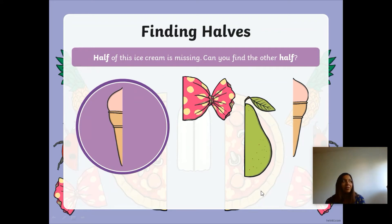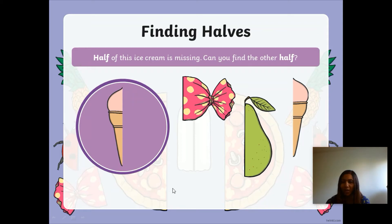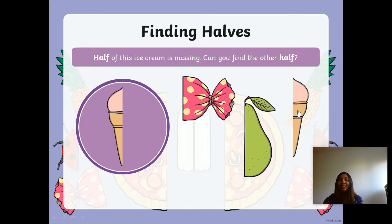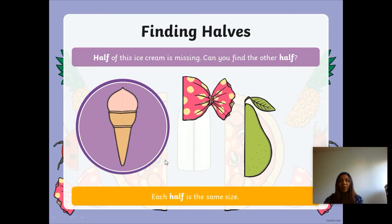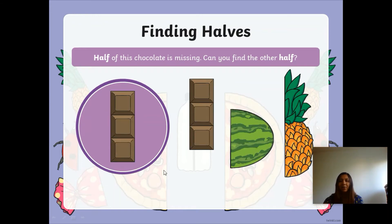Ice cream — another favourite, especially in this hot weather! Half of the ice cream is missing. I wonder if I've eaten it. Can you find the other half? Point to the other half now. Is this it? No, because this is half of a pear. Is this it? No, because this is half of a sweet. It must be this one, because it is exactly the same but on the other side. Two halves make a whole — each half is the same size.